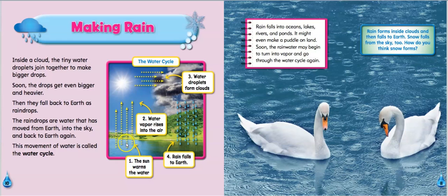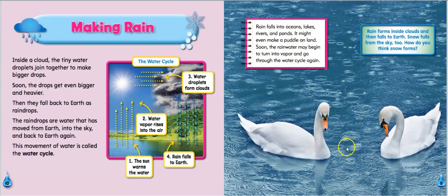One, the sun warms up the water. Two, water vapor rises into the air. Three, the water droplets form clouds. And then four, rain falls to the Earth. Rain falls into oceans, lakes, rivers, and ponds. It might even make a puddle on the land. Soon, the rainwater may begin to turn into vapor and go through the water cycle again. Rain forms inside clouds and then falls to the Earth. Snow falls from the sky too. Wonder how snow forms.